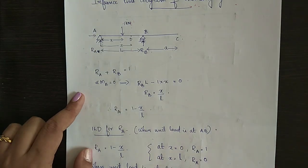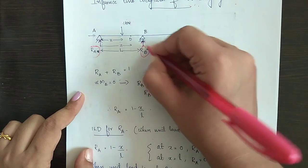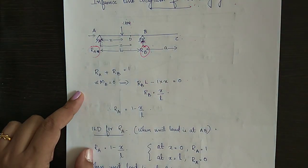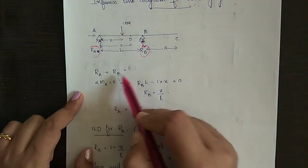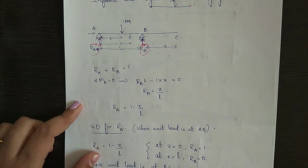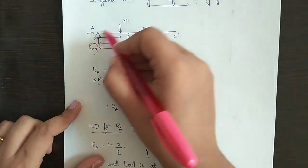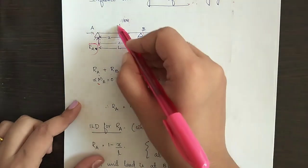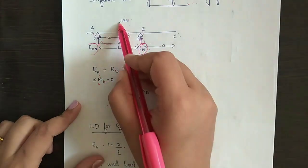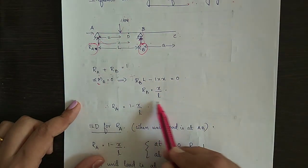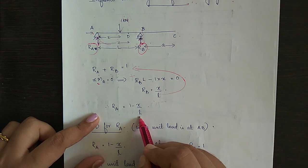First, we need to find out the reactions RA and RB. For that, we equate the upward force to the downward force: RA plus RB equals 1. Taking the moment about A, with anti-clockwise moment as positive, RB into L minus 1 into X equals 0. From this, RB equals X by L, and substituting, RA equals 1 minus X by L.